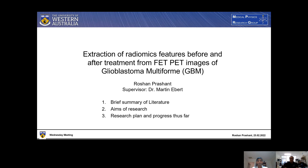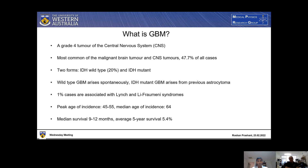Today I intend to provide you with a brief summary of the current literature regarding the subject. I also wish to discuss the aims of my research as well as my research plan and the progress that I've made thus far. Glioblastoma multiforme is a grade 4 tumor of the central nervous system. It is the most common of the malignant central nervous system tumors and brain tumors, accounting for approximately 50% of cases.